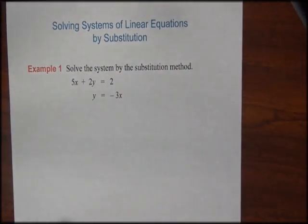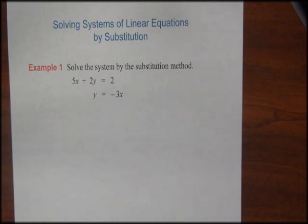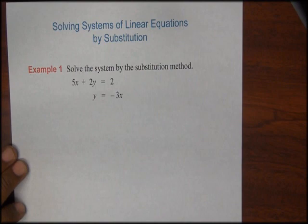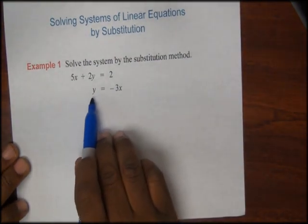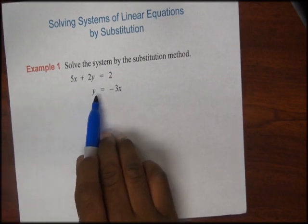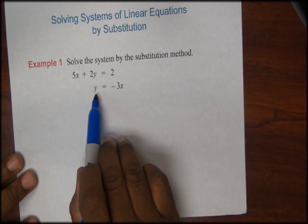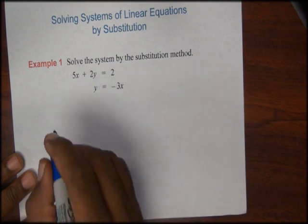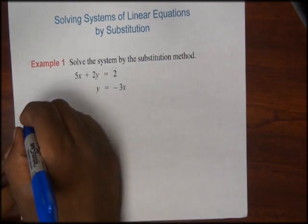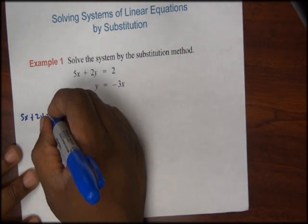In this example, we're asked to solve the system by substitution: 5x plus 2y equals 2, and y is equal to 3x. We can see that one of the equations is already solved for one of its variables, which is y. So now we'll substitute the y-equals equation into our other equation. I'm going to write this out as 5x plus 2y is equal to 2.